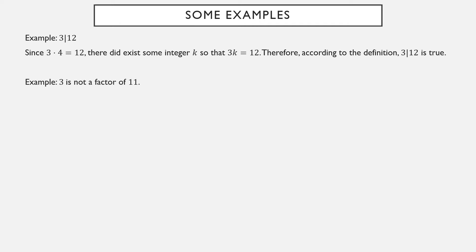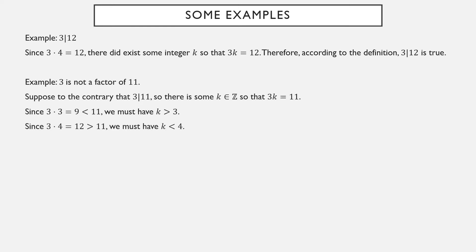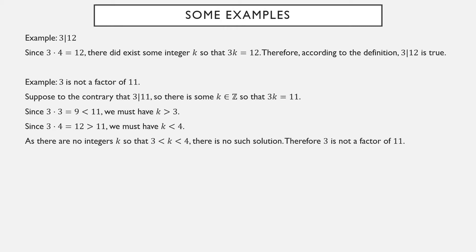Here's another statement: 3 is not a factor of 11. But we can't just say it doesn't go in evenly or that 11 over 3 isn't an integer, because we don't actually have a notion of division like that yet. So here's how we prove it indirectly. Assume to the contrary that 3 is a factor of 11, so there must be an integer k so that 3 times k equals 11. But 3 times 3 is 9, too small, so k must be bigger than 3. But 3 times 4 is 12, too big, so k must be less than 4. There are no integers between 3 and 4, so there is no k with 3 times k equal to 11. Therefore 3 is not a factor of 11.